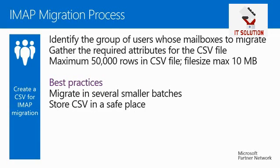The second step is to create a CSV file for the IMAP migration. You need to identify the group of users whose mailboxes you want to migrate. Each row in the CSV file contains information necessary to connect to a mailbox in the IMAP messaging system. The required attributes are: email address, which specifies the user ID for the Exchange Online mailbox; username, which specifies the logon name to access the mailbox on the IMAP server; and password, which is the password for that account.